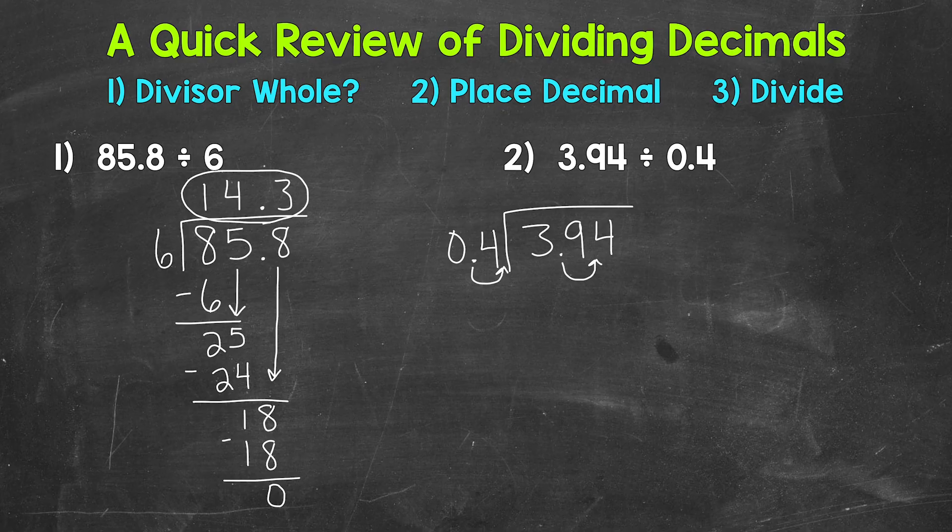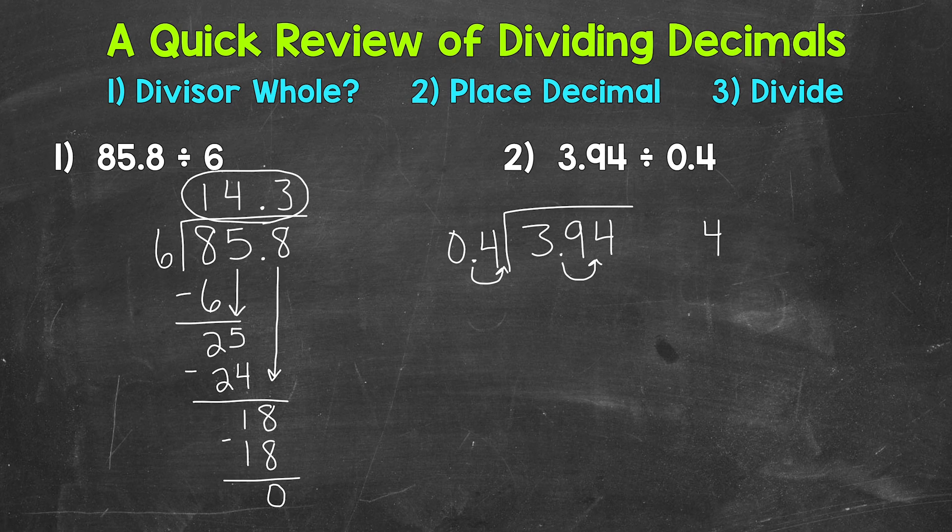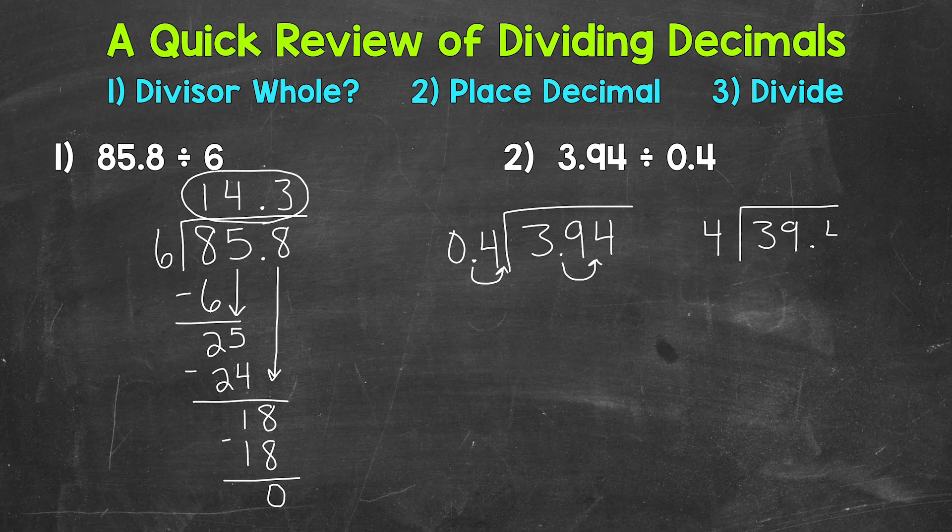Once we get to this point, we need to rewrite the problem with the whole divisor and the decimal placed. So we have 4 for our divisor, and then 39.4 for our dividend. Now is our divisor whole? Yes. So we can bring our decimal straight up. Now it's placed where we need to have it in our answer, and we can go through our division process.